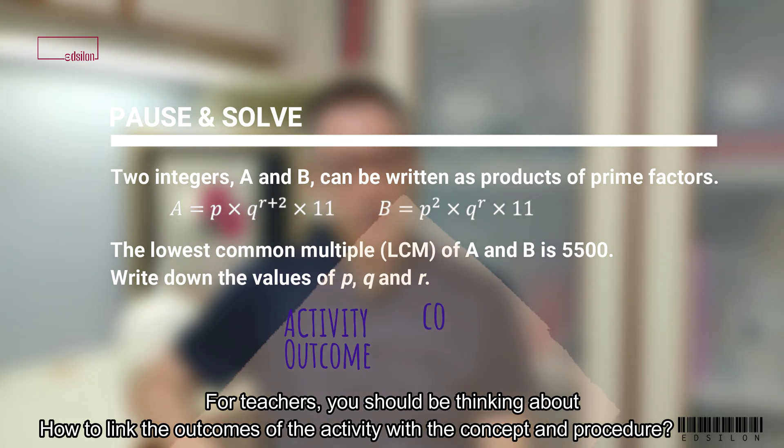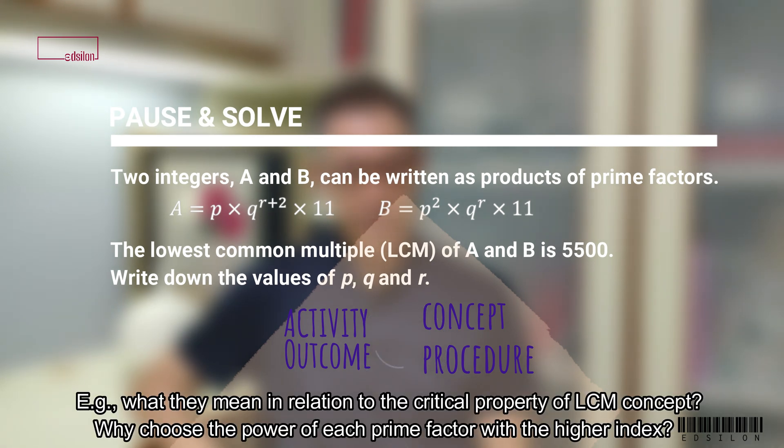Then say how to obtain the power in LCM from those in the integers. For teachers, you should be thinking about how to link the outcomes of the activity with the concept and procedure. For example, what they mean in relation to the critical property of LCM concept. Why choose the power of each prime factor with the higher index?